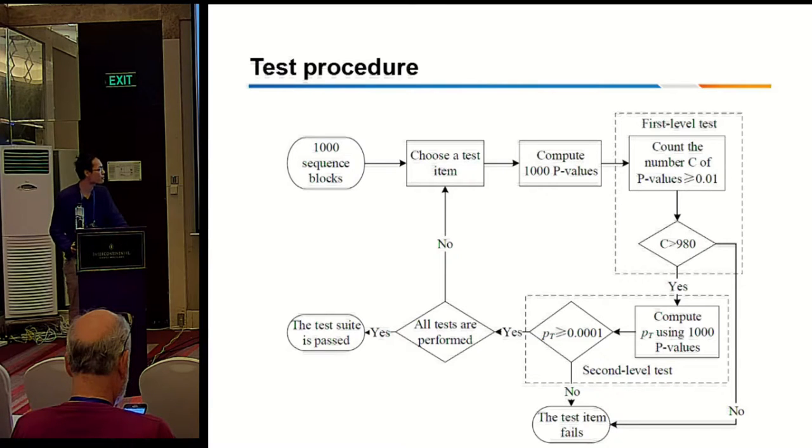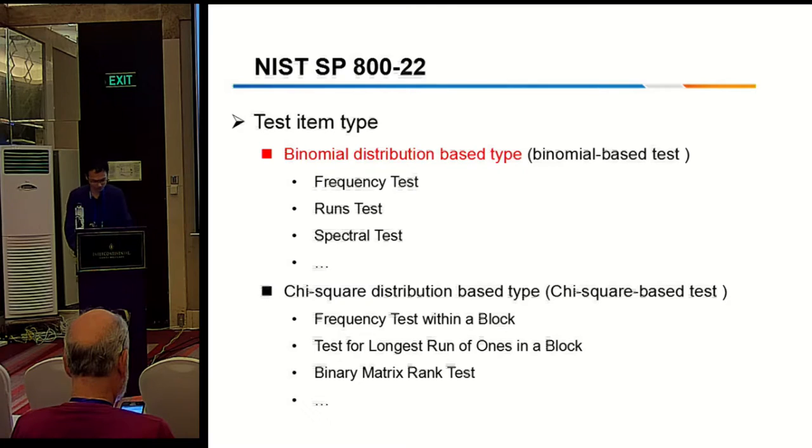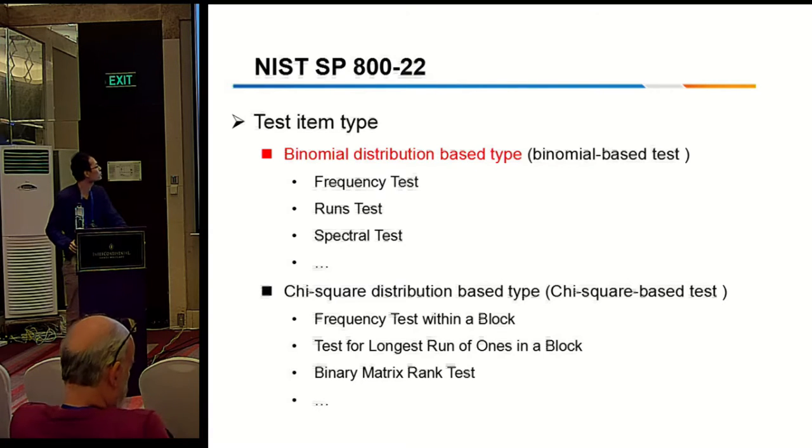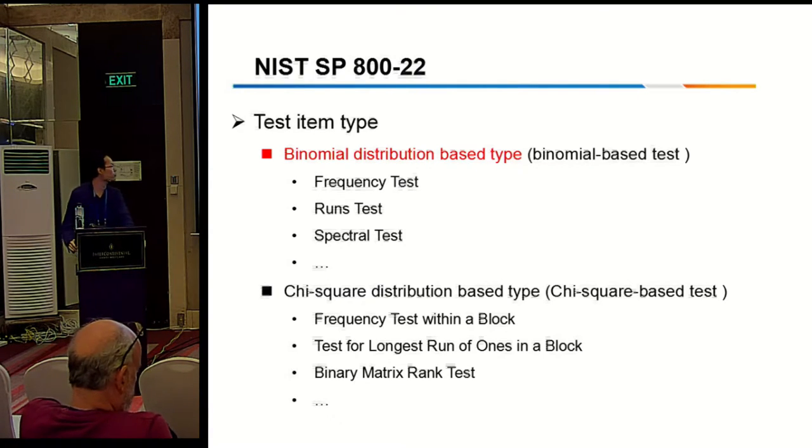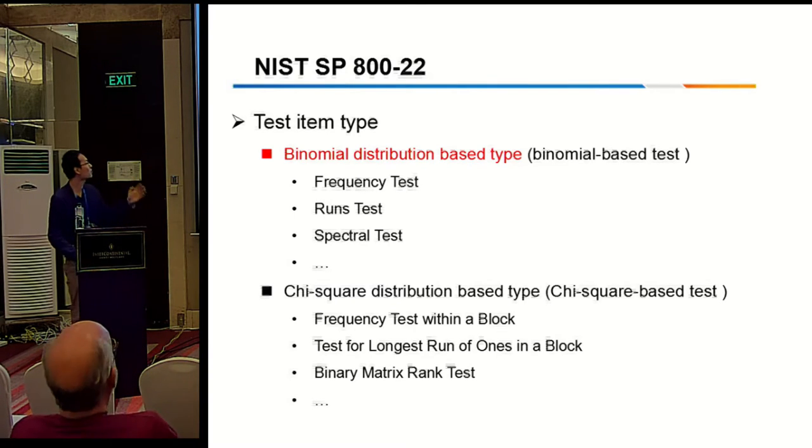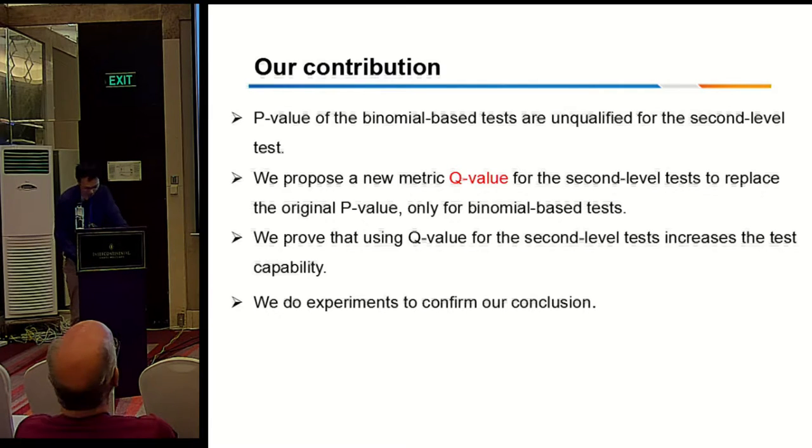And the second level test computes a new value called CT. And if CT is less than 1000, then the second level test fails. And if anyone fails, the RNG is considered bad. I should add that each test item has its own test statistic, and according to their statistics distribution, the 15 test items are divided into two types: the uniform distribution tests and the chi-square distribution tests. Our work is about the uniform distribution tests.